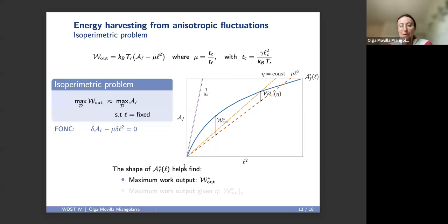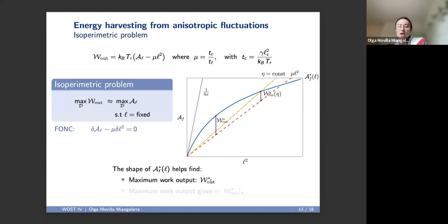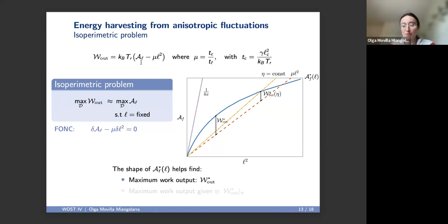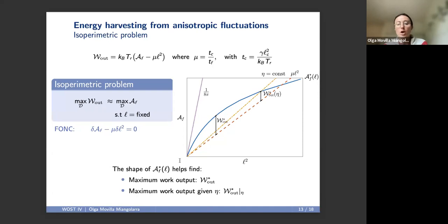Here we have numerically solved the isoperimetric problem — these are the optimal areas for different fixed lengths. We find the solution to the problem of maximizing work output, because the maximum work output is simply the maximum vertical distance between this optimal isoperimetric line and the line with constant slope mu. Moreover, by solving this isoperimetric problem, we also have a solution to another problem for free: maximizing work output for a fixed efficiency. The points with constant efficiency are located on a line in this plot, so the operating point for this problem is simply the intersection, and the work output is given by the vertical distance.